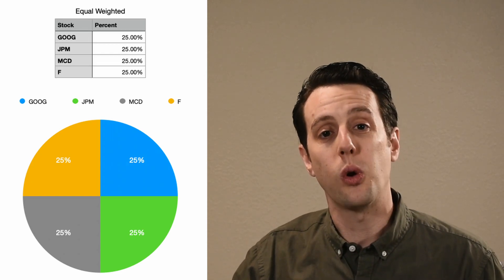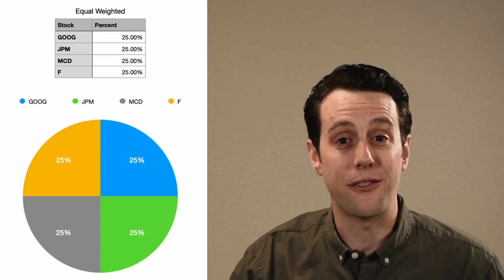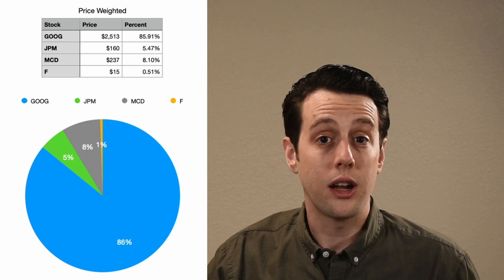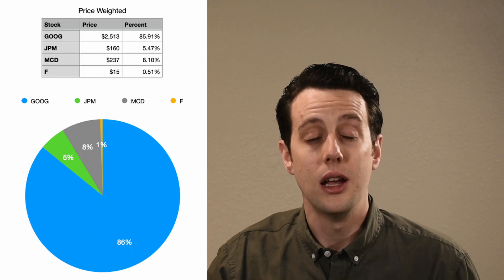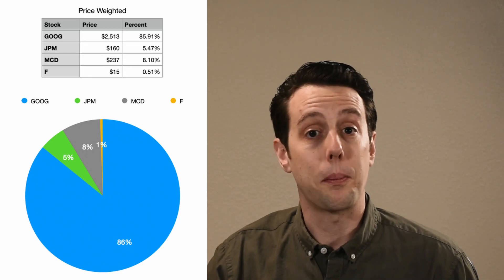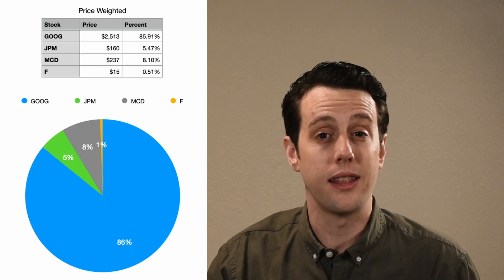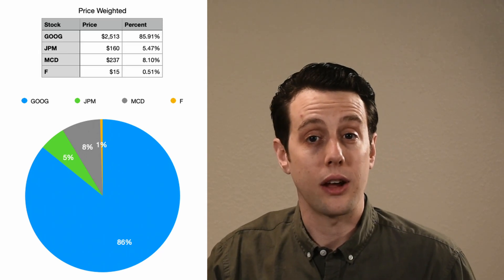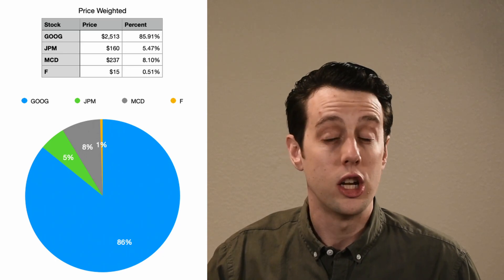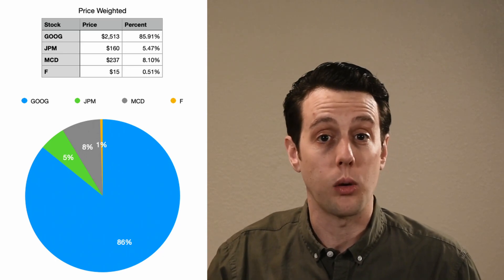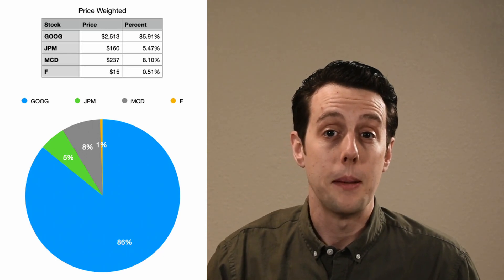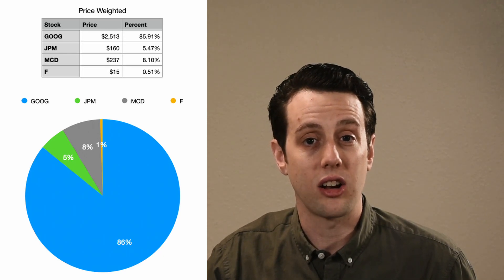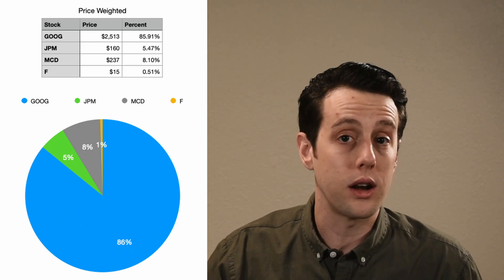Alternatively, we could use the price of the stock. Right now, the prices of these stocks rounded to the nearest dollar are: Google at $2,513, JPMorgan at $160, McDonald's at $237, and Ford at $15.